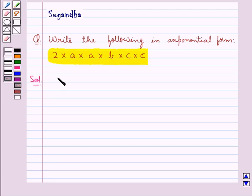We have to write 2 into A into A into B into C into C in exponential form. This can be written as 2 into... now we have 2 A's.